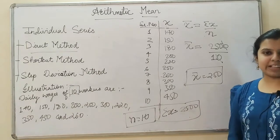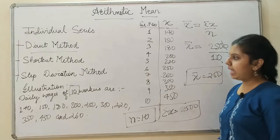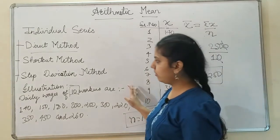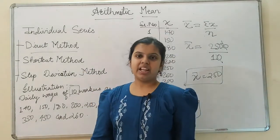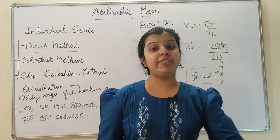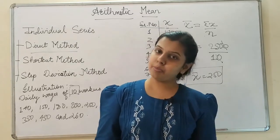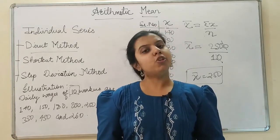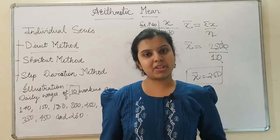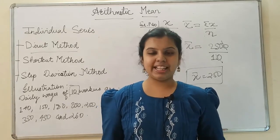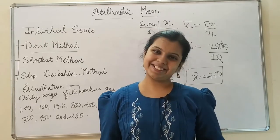In our next session we will be discussing the shortcut method. I hope the direct method for calculating the arithmetic mean is clear to you. The formula is simple: sum of all the observations divided by the total number of observations — arrange your data, calculate sigma X, keep the value of n, put it in the formula, and you will get the arithmetic mean. Please like and subscribe to my channel. Thank you so much for watching.